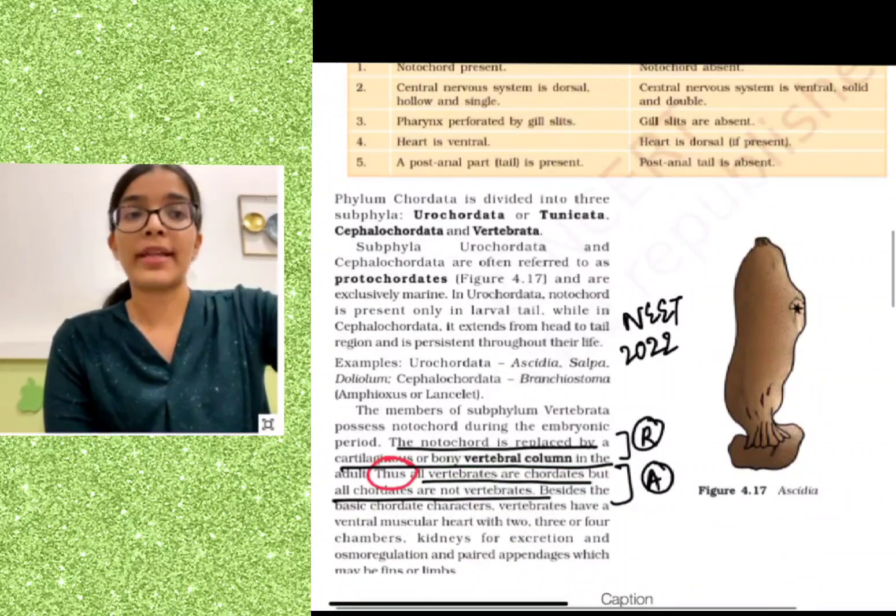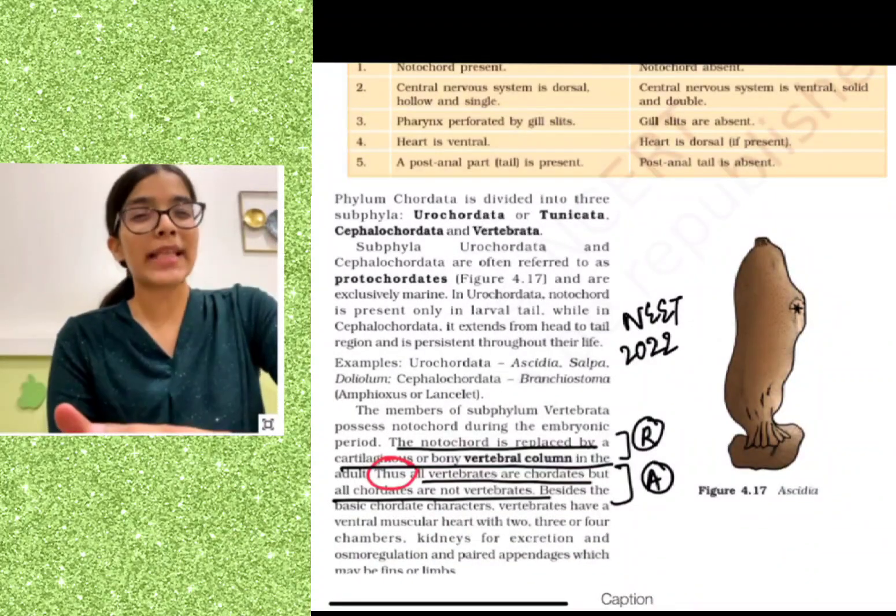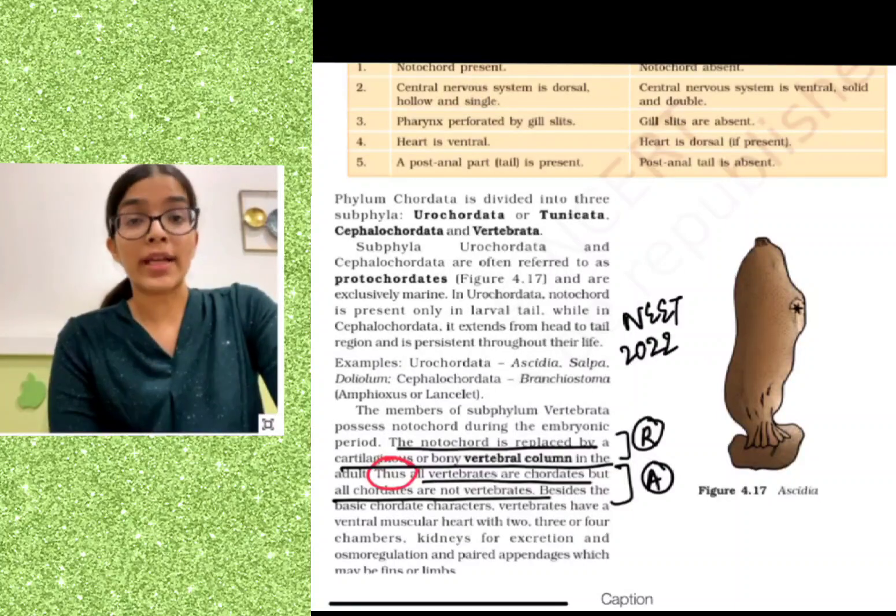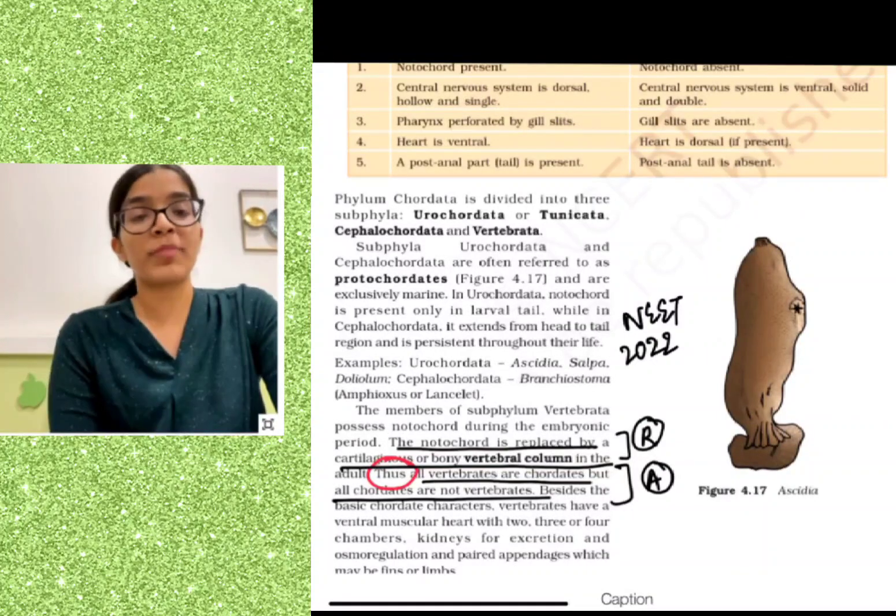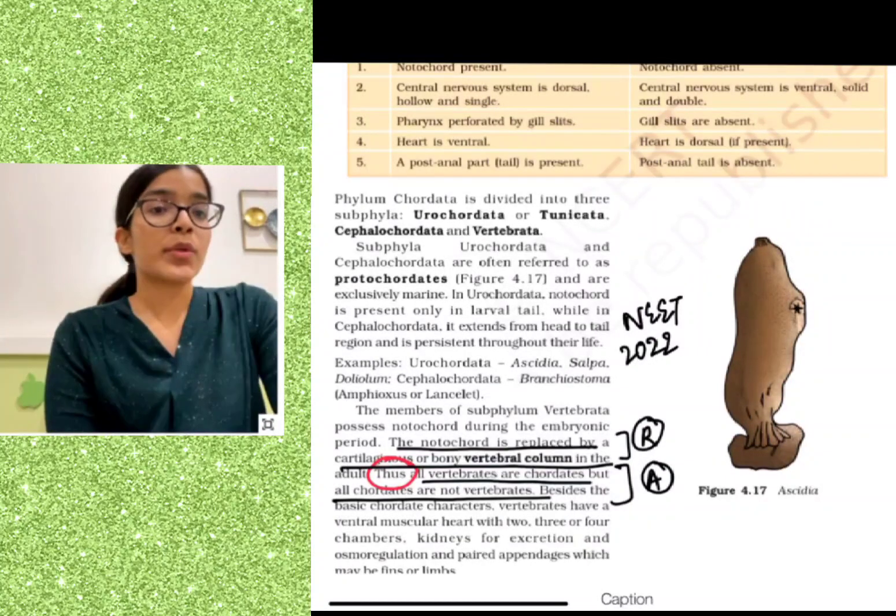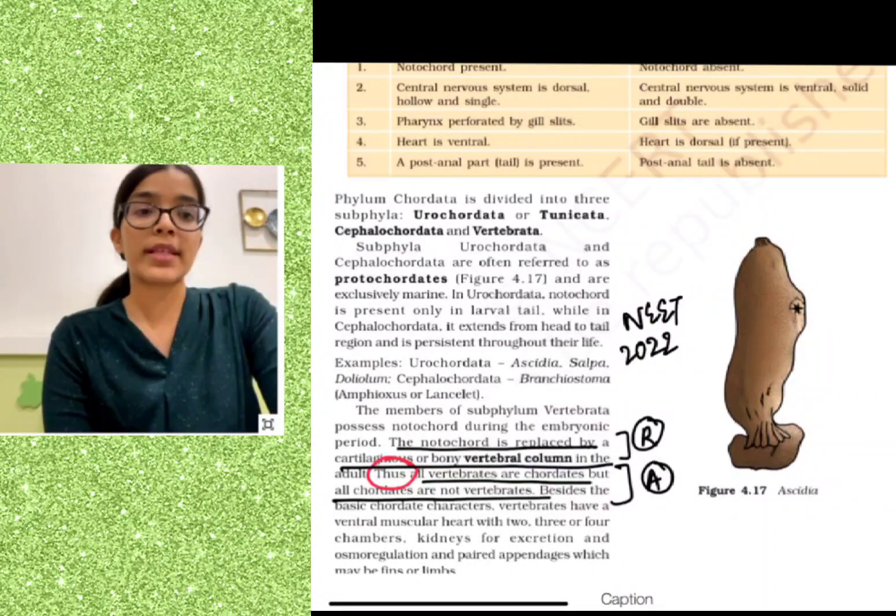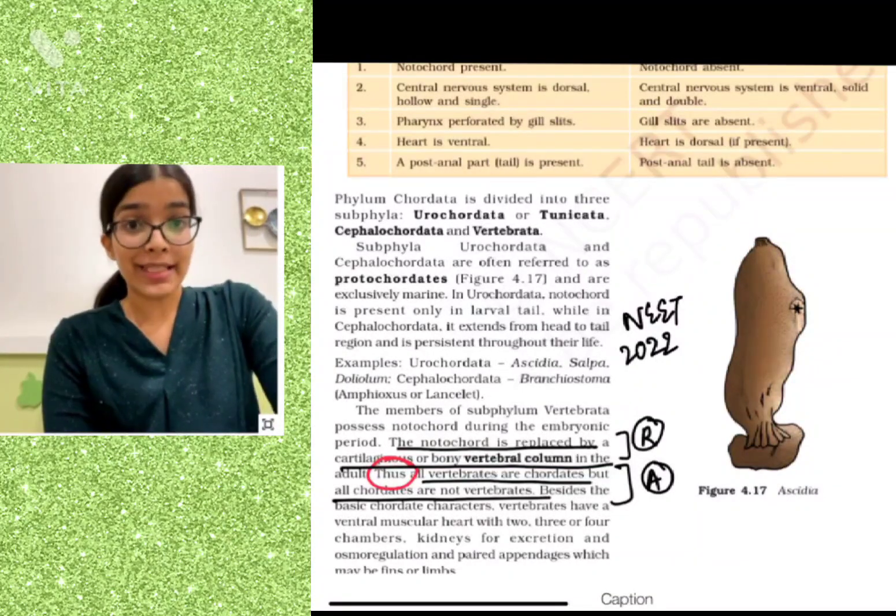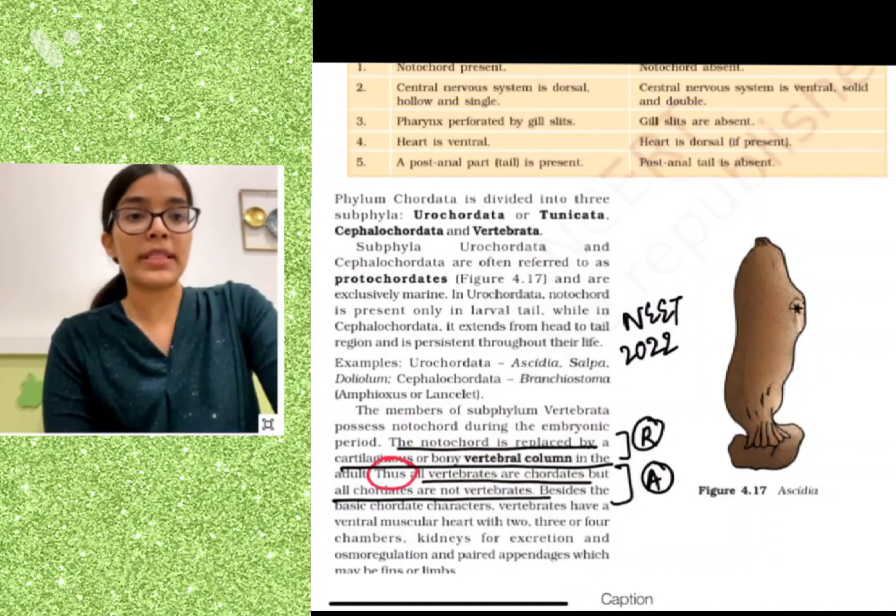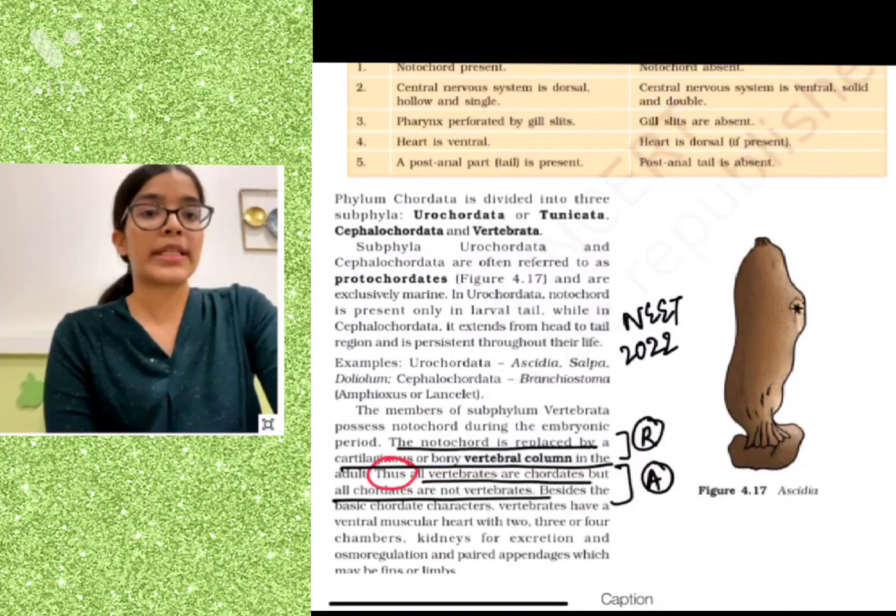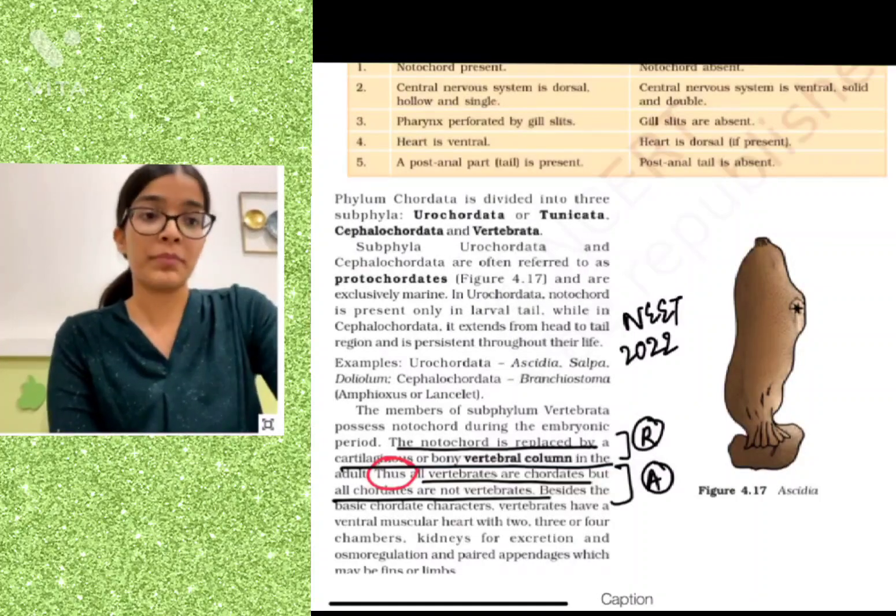The next question is very important and it came in NEET 2022 - it was a slightly tricky one. By this I mean that if you hadn't read NCERT very carefully, it could have been difficult to solve. The notochord is replaced by a cartilaginous or bony vertebral column in the adult. Thus, all vertebrates are chordates, but all chordates are not vertebrates. 'Thus' is our keyword here. The assertion becomes that all vertebrates are chordates but all chordates are not vertebrates, and the reason is that the notochord is replaced by the vertebral column.